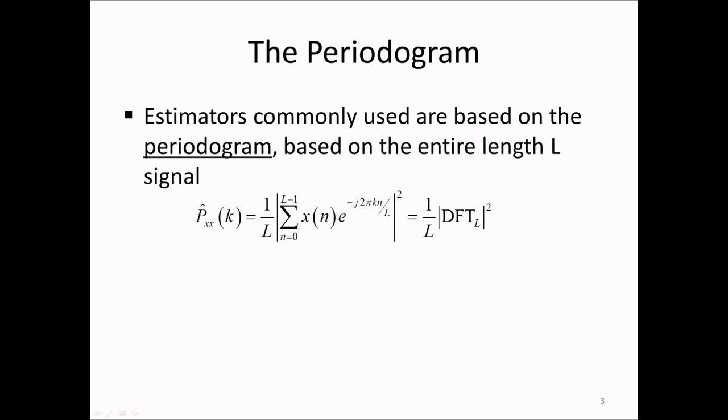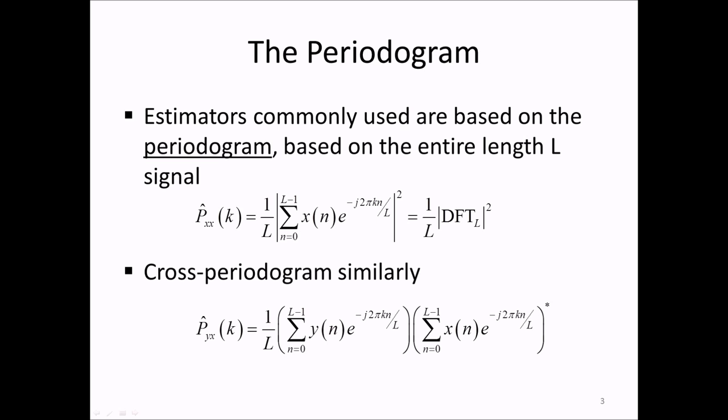We now start with the periodogram. This was the first historical attempt to find an estimate of the PSD, and we will see that it's the basis of the Welch estimator. The periodogram is the magnitude squared of the DFT of the signal X of n divided by the length of the entire signal. This means it is computed by taking one long FFT of the whole signal. Similarly, with two different signals X and Y, we can compute the cross-periodogram by multiplying the DFT of signal Y by the complex conjugate of the DFT of signal X, and again divide by the length of the signal.